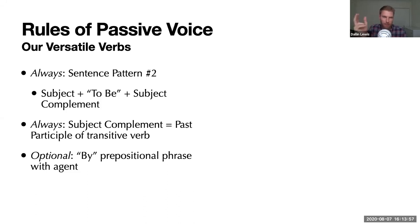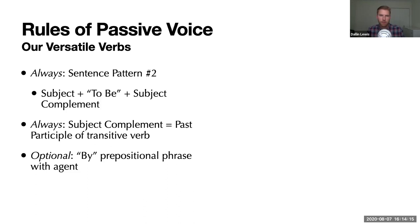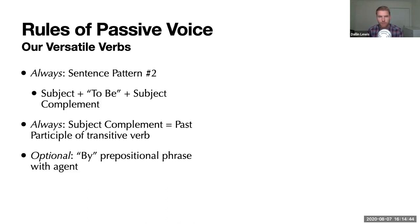Number two: the subject complement is always the past participle of a transitive verb. It has to be a transitive verb and it has to be a past participle. Think of an intransitive verb like 'remains' — we could not say 'the ball remains' and turn it into the passive voice. Why not? Because there's no direct object to put into the subject position. You'd be left with 'is remained by the ball,' which doesn't make any sense. So intransitive verbs cannot be made into the passive voice — you need that object to become the subject of your sentence.